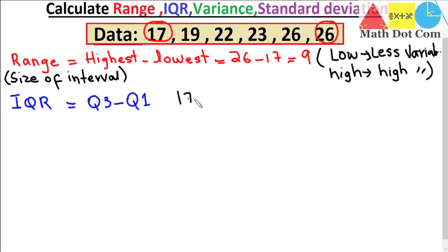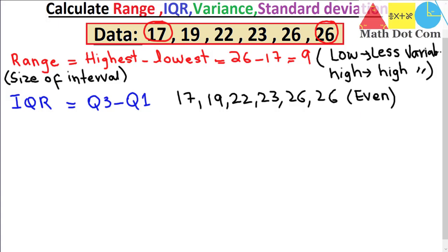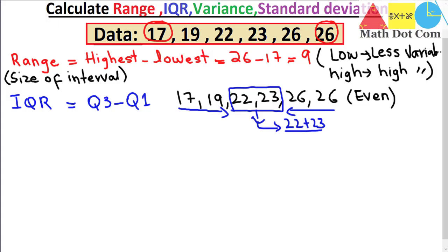I will write the data here again so that we can easily find Q3 and Q1. The total number of values in the data set is 6, so the data is even. First of all we have to find the median. As the data has an even number of values, we pick the center two values — moving from both ends, the center two values are 22 and 23. We take their average: 22 plus 23 gives 22.5. So this is the median, which refers to Q2.